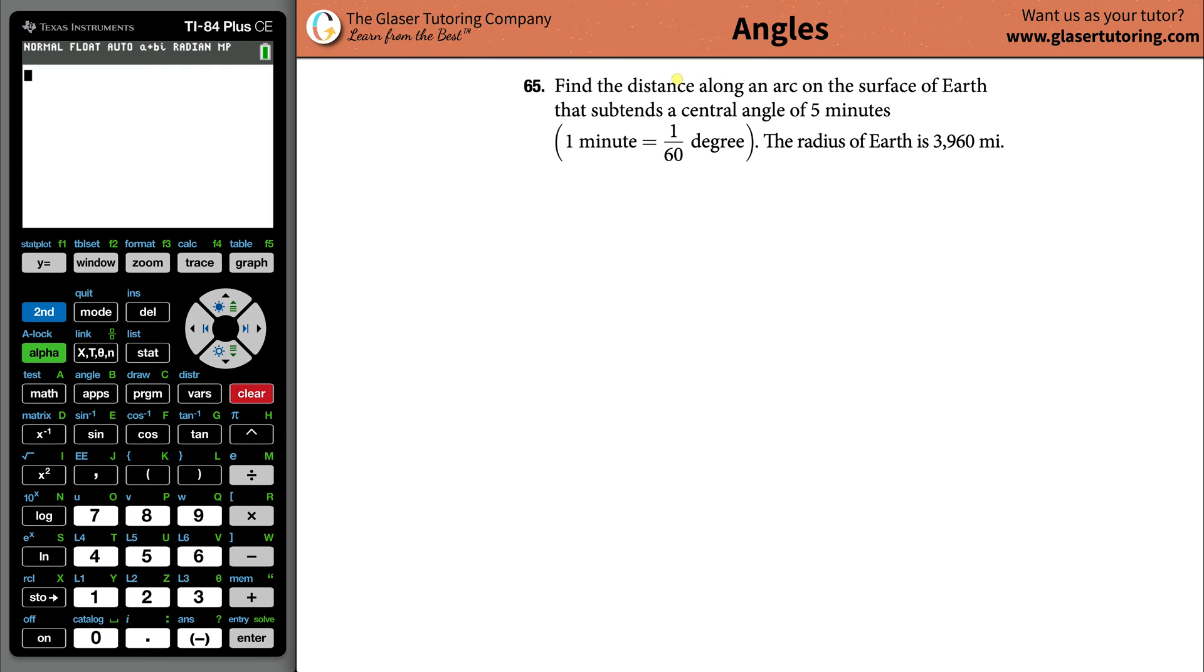Number 65, find the distance along an arc on the surface of Earth that subtends a central angle of five minutes, and they tell us that one minute is equal to one-sixtieth of a degree. The radius of Earth is 3,960 miles.